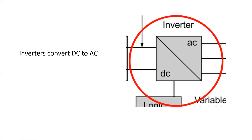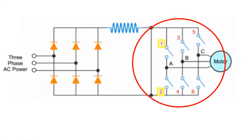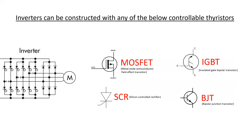Inverters convert DC voltage to AC voltage using a number of different types of electronic devices. Essentially, if we simplify the process, an inverter section is a series of six switches. Depending on which two switches are closed at any given moment, that particular line is energized. Inverters can be constructed with any of various controllable thyristors, all having different gate controls that allow them to turn on and conduct, then turn off or commutate, producing small or long bursts of DC voltage.